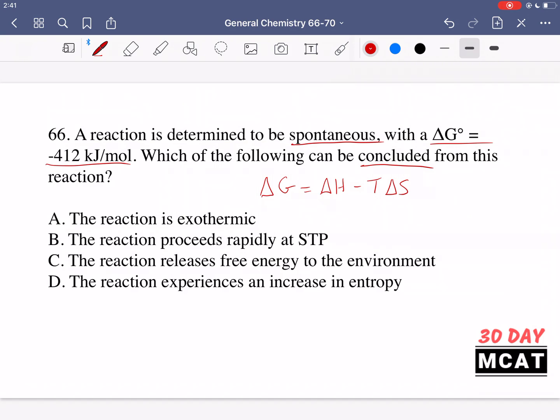And for delta G to be negative, you could have a negative delta H. Or you could have a positive enough delta S, so high enough entropy. So it doesn't necessarily have to be something which is exothermic. So that's not something we can conclude.